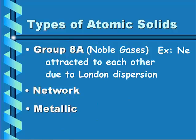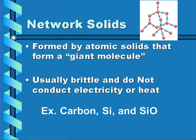An atomic solid has three different types: Group 8A, which is simply our noble gases. Noble gases are the weakest atomic solid because they only have attraction due to London dispersion forces. We also have network solids and metallic solids. Network solids are formed by atomic solids that are a giant molecule — they are usually brittle and do not conduct electricity or heat, although they have extremely high melting and boiling points.